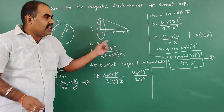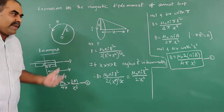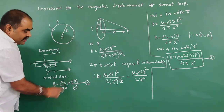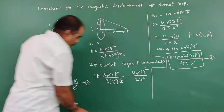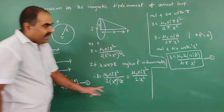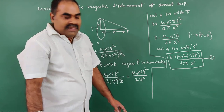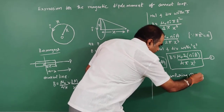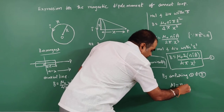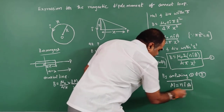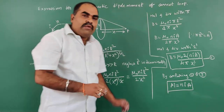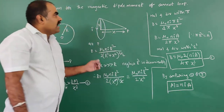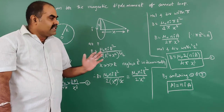A current-carrying circular coil acts as a small bar magnet. By comparing the first and second equations: μ₀/4π is present in both, the factor 2 is present in both, and X³ is present in both. Therefore, comparing the two, instead of M in the bar magnet formula, NIA is present. So by comparing equations 1 and 2, M equals NIA. This is the magnetic moment expression for a current-carrying loop.